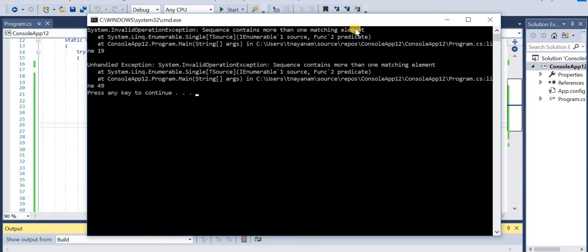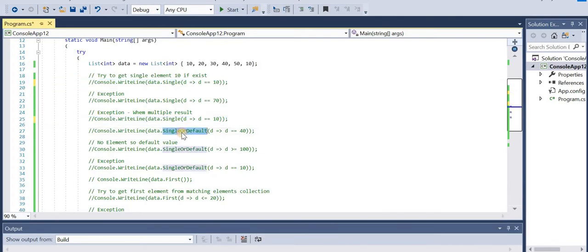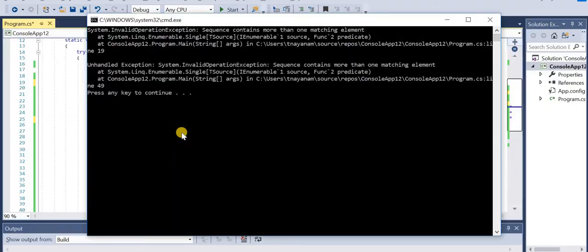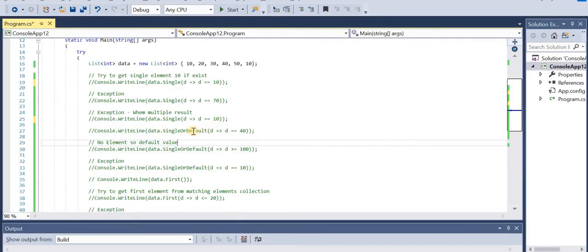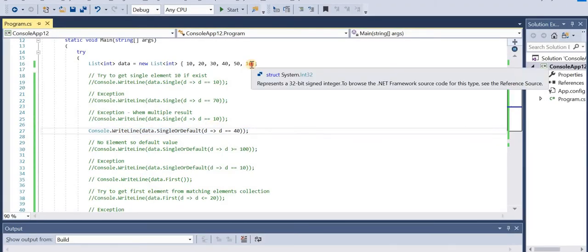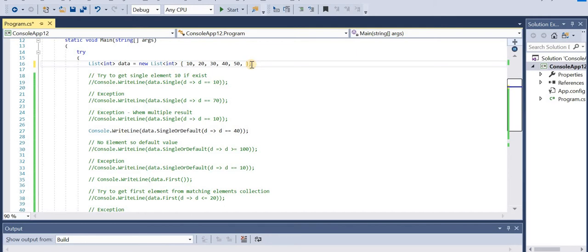Now let's see SingleOrDefault. It returns a single specific element from a collection of elements if the element match is found. An exception is thrown if more than one match is found. A default value is returned if no match is found. I'll uncomment this example and make the list unique.